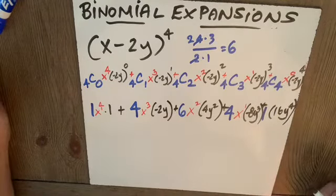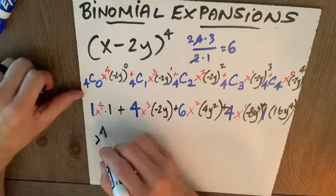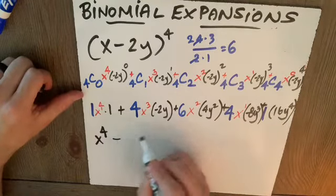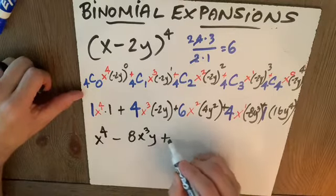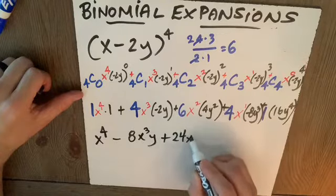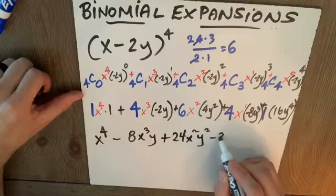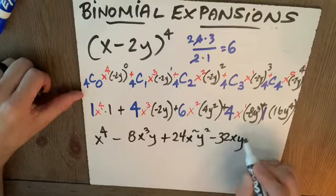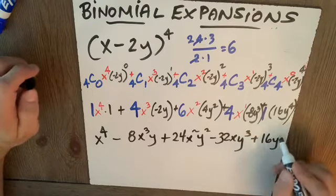So, I do expect you to know some basic algebra. And finally, my expansion will give me x to the fourth minus 8x cubed y plus 24x squared y squared minus 32xy cubed plus 16y to the fourth.